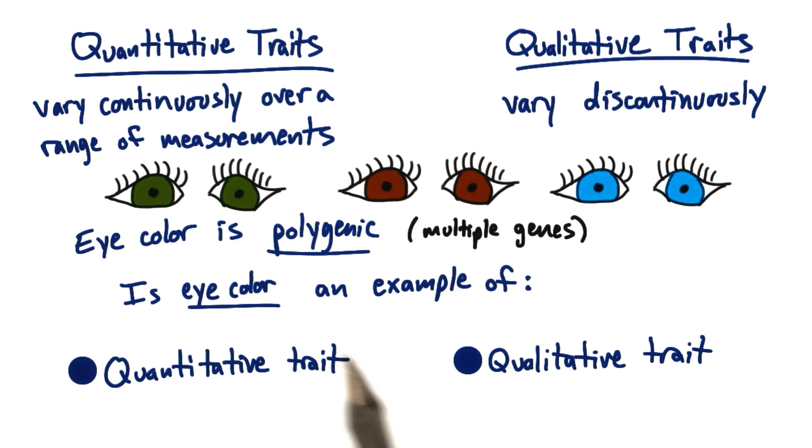So let's look at the polygenic trait of eye color. Polygenic, remember, meaning that it's influenced by multiple genes. Suppose we classify everyone based on whether they have brown eye color, green eye color, or blue eye color. Would this be an example of a quantitative or qualitative trait?